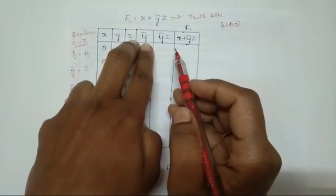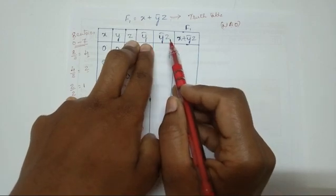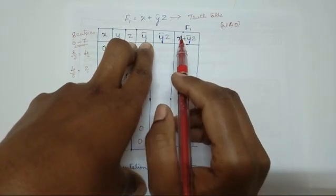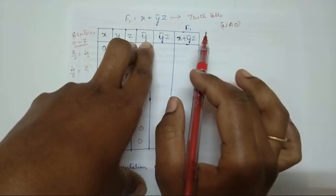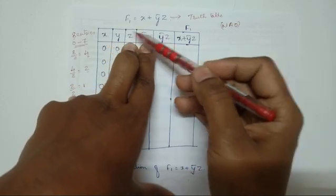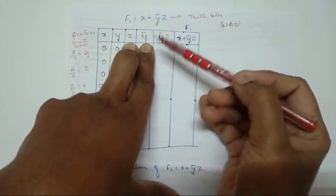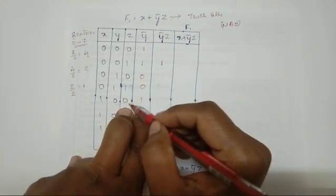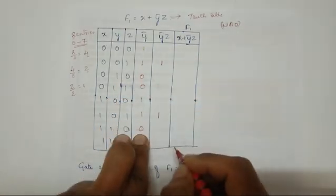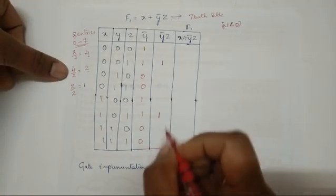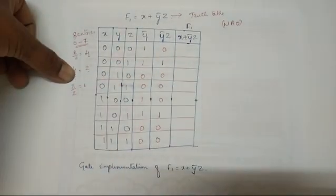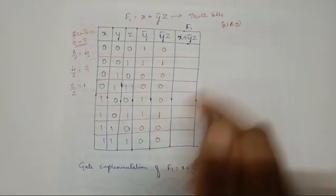To compute the y̅z column, we look at the y̅ and z columns together. In an AND operation, only when all inputs are 1 do we write 1; otherwise we write 0. Checking for 1-1 pairs: the result is 0 0 0 1 0 0 0 1 — we fill in zeros for the remaining rows directly.